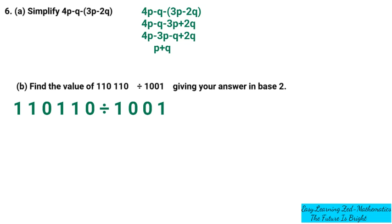Now I'm going to convert these numbers, but first we need to identify the place value of each digit. I'll start with the divisor, which is 1001. The number on the far right, which is 1, has a place value of 1. The next digit, 0, has a place value of 2s. The next 0 has a place value of 4s. And the 1 on the left has a place value of 8s.